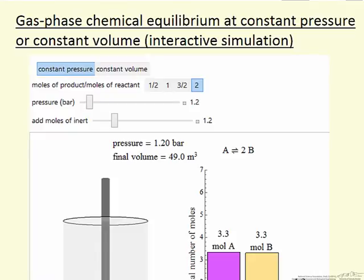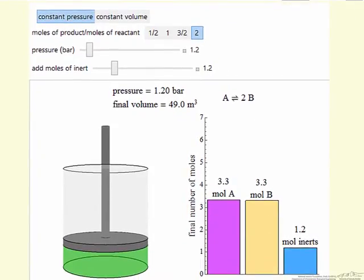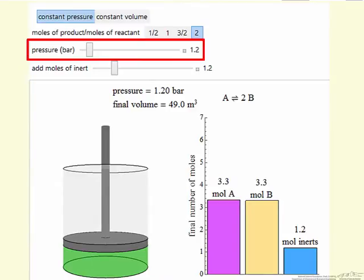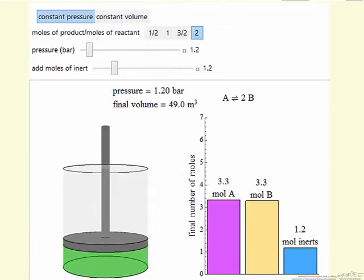Let's look at a snapshot of what this looks like. We are showing the constant pressure option, so select the pressure with the pressure slider. The simulation calculates the number of moles at equilibrium where we start with 5 moles of A at 1.2 bar.